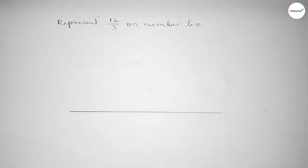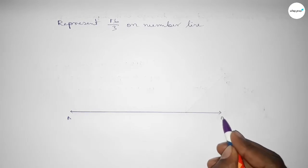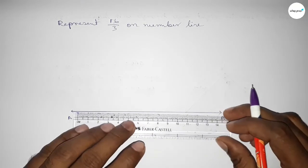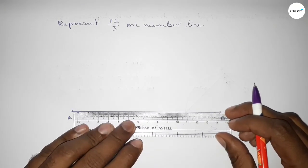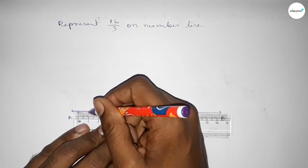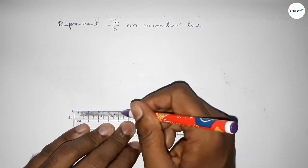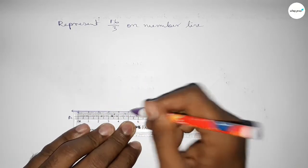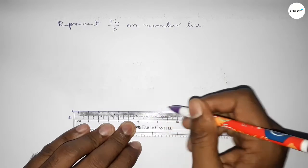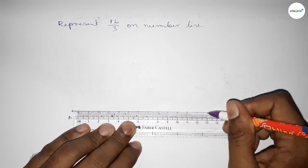First of all we have to draw the number line — drawing a line and taking arrow marks on both sides. Next we have to mark the numbers on the line using a scale, by this way.